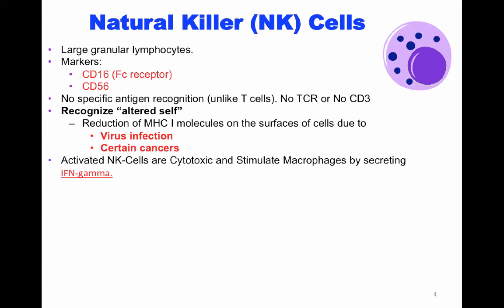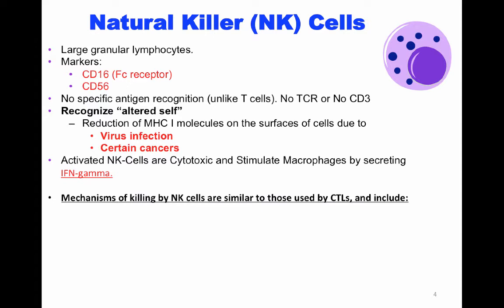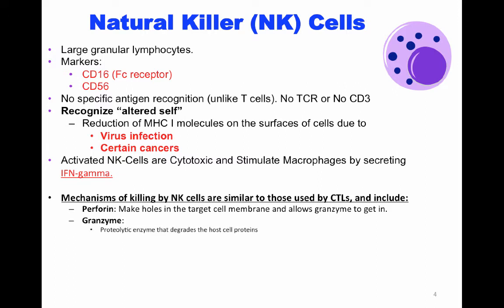Activated natural killer cells are cytotoxic and stimulate macrophages by secreting interferon gamma. The mechanisms of killing by natural killer cells are similar to those used by cytotoxic T lymphocytes, and include perforin, which makes holes in the target cell membrane and allows granzyme to enter. Granzyme is a proteolytic enzyme that degrades the host cell proteins. In addition, it activates the caspase enzyme system to trigger apoptosis, or programmed cell death, within the host cell.